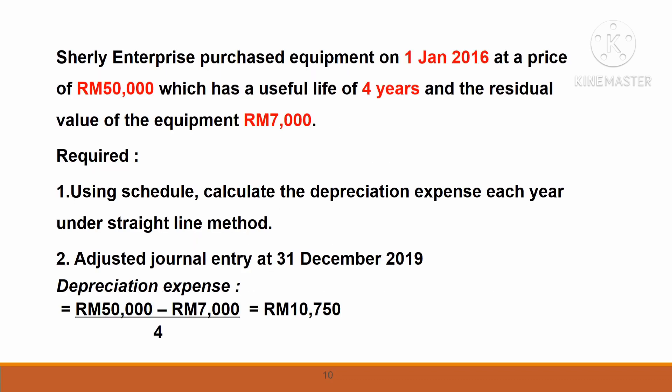Next question: Should Enterprise purchased equipment on 1st January 2016. The date of purchase is 1st January 2016, cost of machine RM$50,000, useful life 4 years, and residual value RM$7,000. You are required to prepare a schedule of depreciation expense each year under the straight line method, and the adjusted journal entry at 31st December 2019. The depreciation expense is: RM$50,000 less RM$7,000 divided by 4 years, giving RM$10,750 per year.